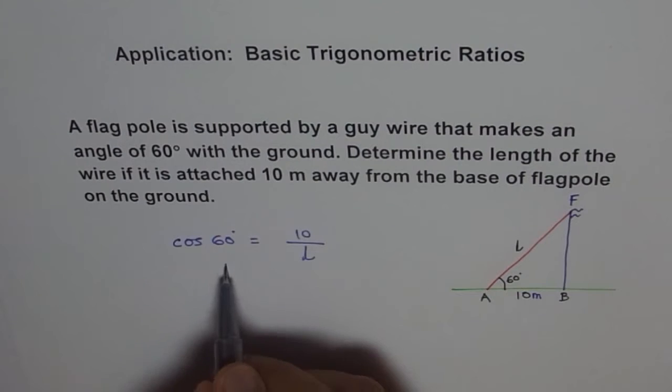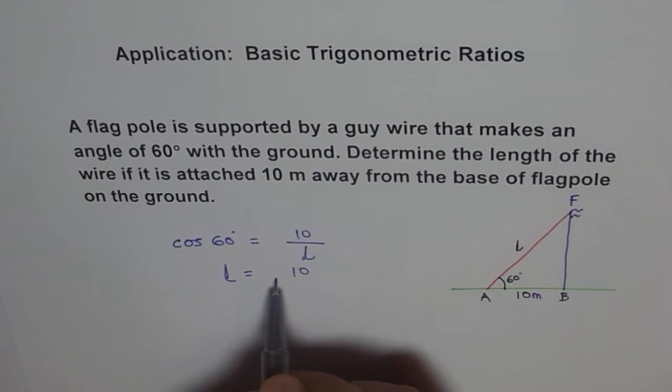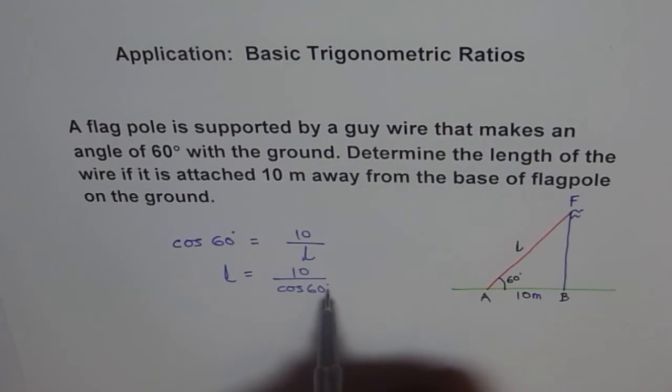Adjacent over L. Now cross multiply. L equals 10 divided by cosine 60 degrees. It's important to write degrees, otherwise one may not know what 60 means. People will treat it as radians. And calculate the answer. So it is 10 divided by cosine 60 degrees, which equals 20.